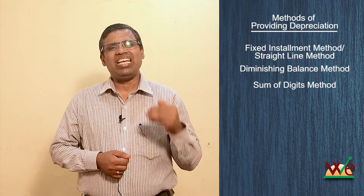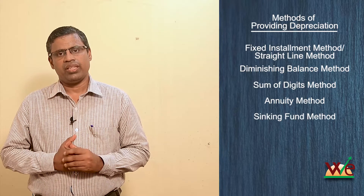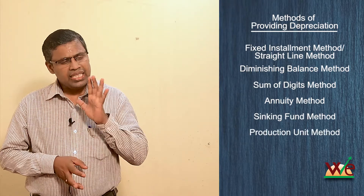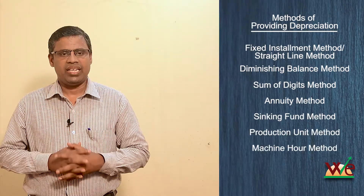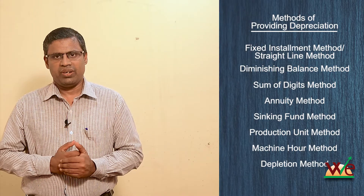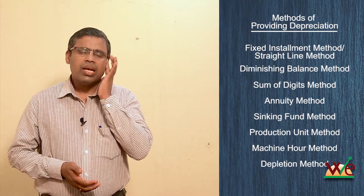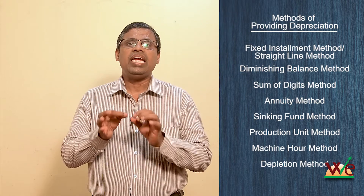Other methods include: the sum of digits method, the annuity fund method, the sinking fund method, the production unit method, the machine hour rate method, and the depletion method. However, the two primary methods remain the straight line method and the fixed installment method.